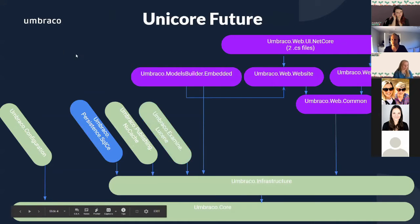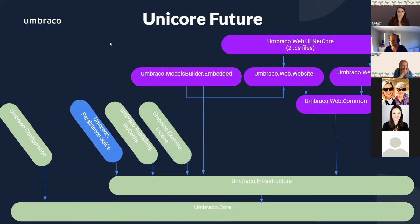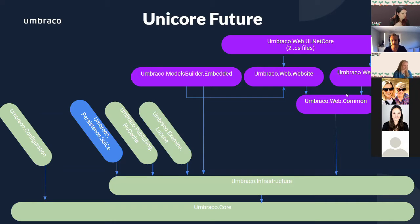In the future, we will remove the .NET framework executable and Umbraco Web. The new executable — comparable to your project when you use Umbraco — currently has only two CS files: a main method (program.cs) and a startup. From there, you add Umbraco like any other dependency. We've also separated the web into Website, Web Back Office, and Web Common. When using load balancing, only one server needs the back office, giving a smaller footprint on front-end servers.